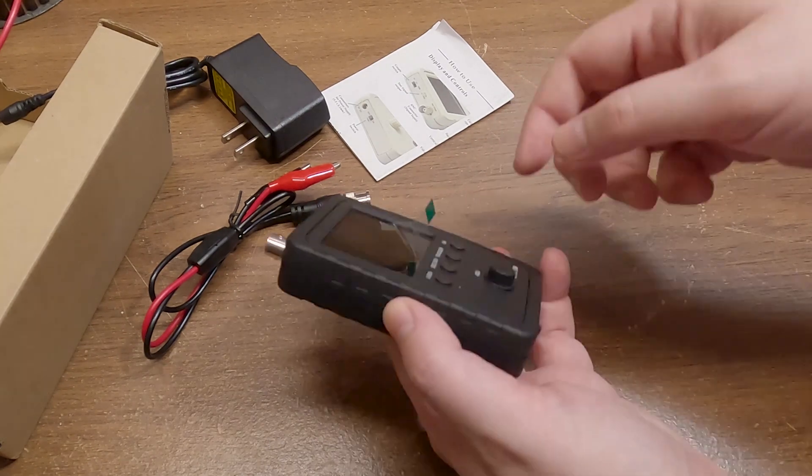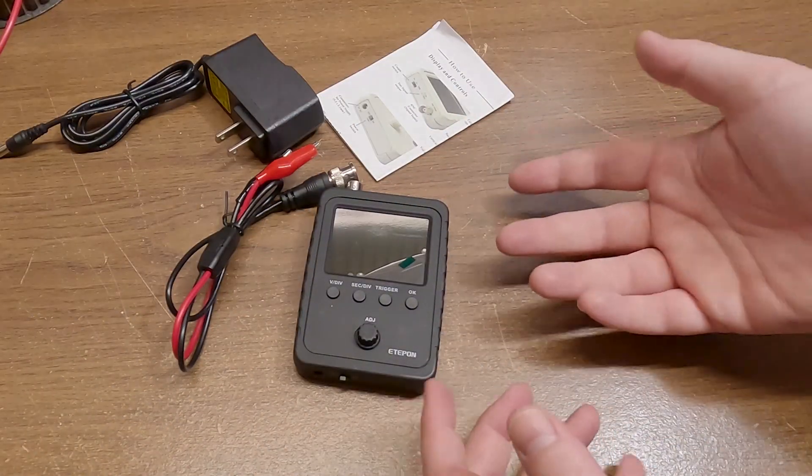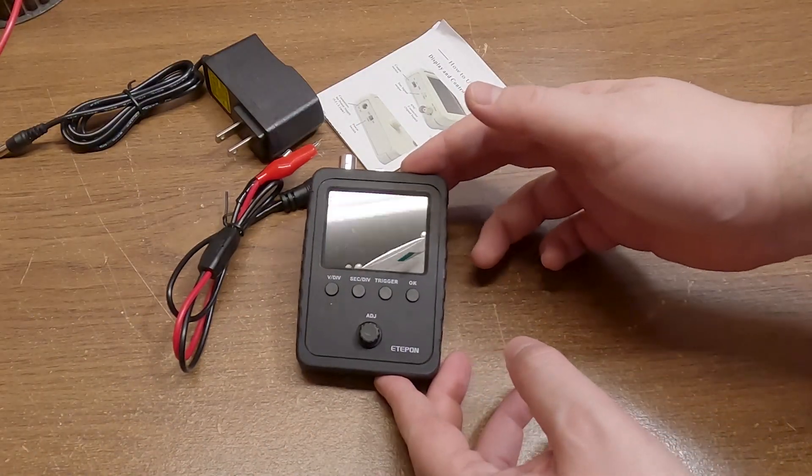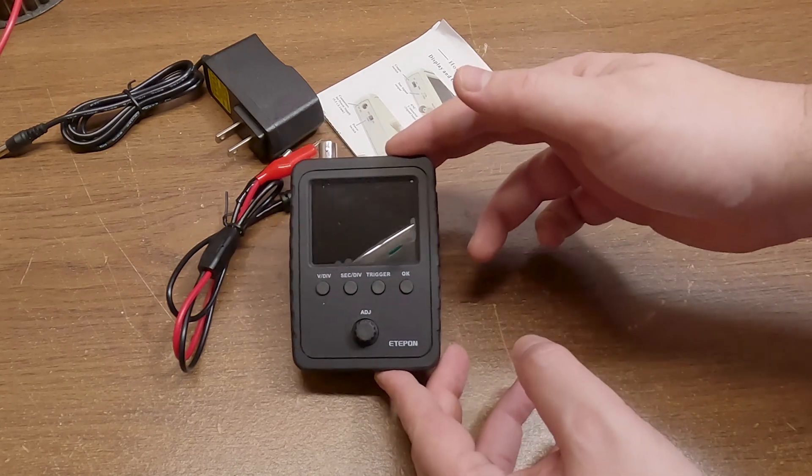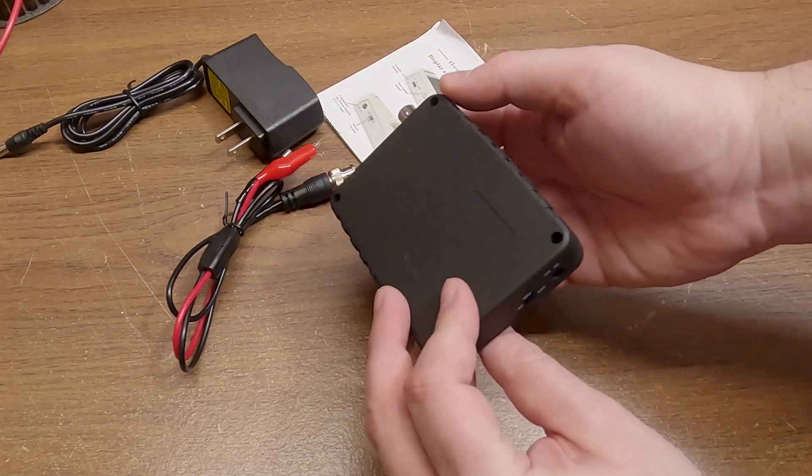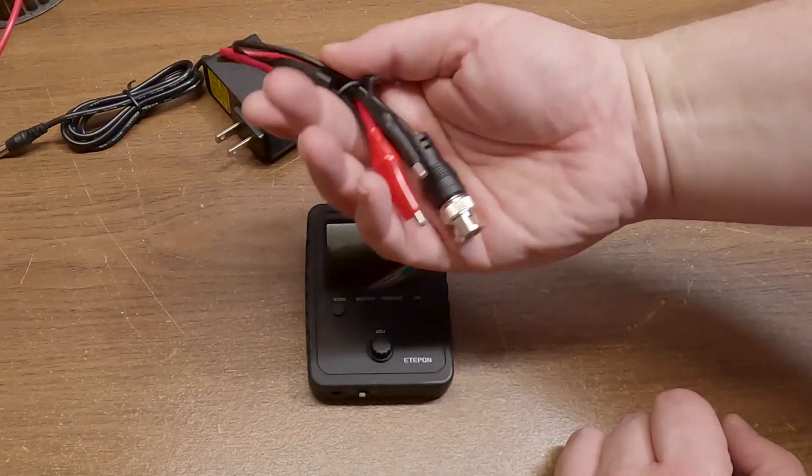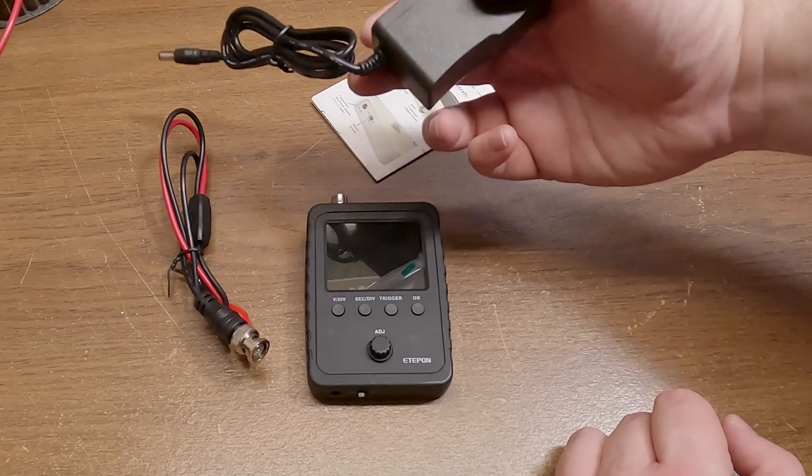Now it used to be oscilloscopes were rather expensive, but this little tiny pocket guy was under 40 bucks. I mean, if this thing shows us anything, that's gonna be a pretty good value as far as oscilloscopes go. Comes with some basic leads and the power supply too.